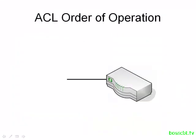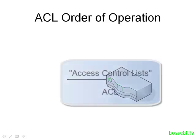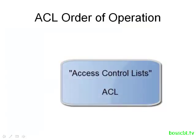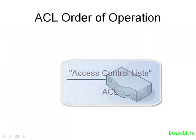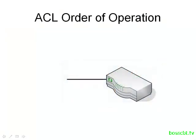Let's take a look at the order of operation when we talk about Access Lists. Access Lists are commonly referred to as Access Control Lists and they're often abbreviated as ACL. You may see that come up and hear some people refer to them as ACLs — they're all talking about the Access List.